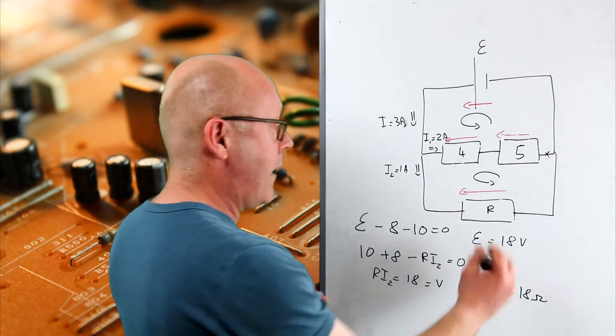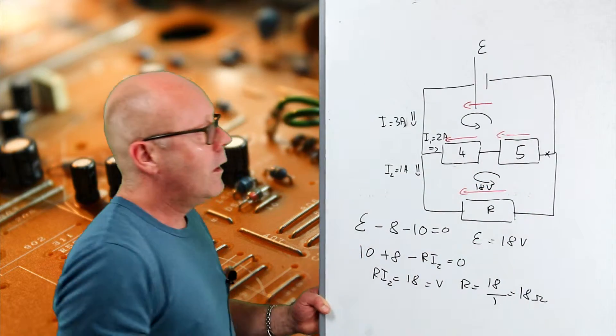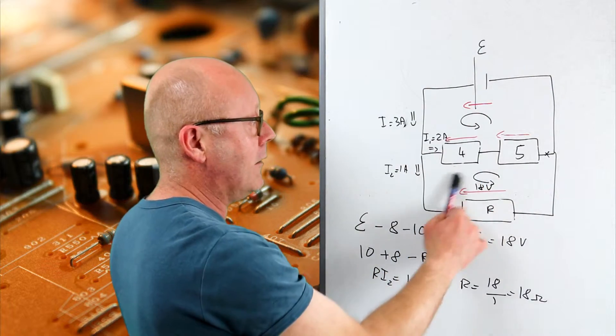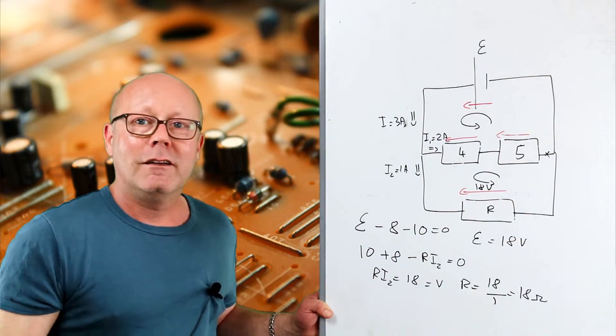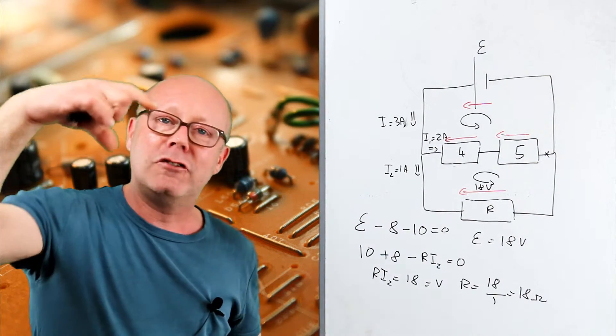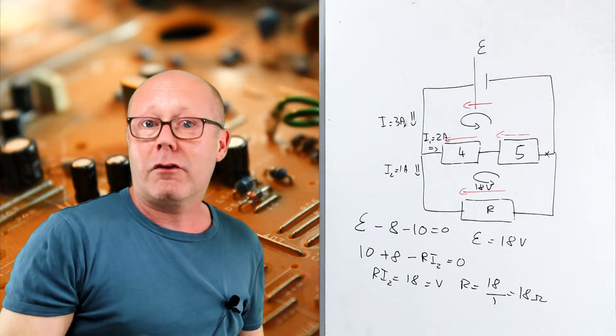So here you would have 18V. Well, notice that you've got 18V here, 18V for this sum and 18V there. This is also a proof to see that when you have two resistors in parallel, the potential drop across them is the same.